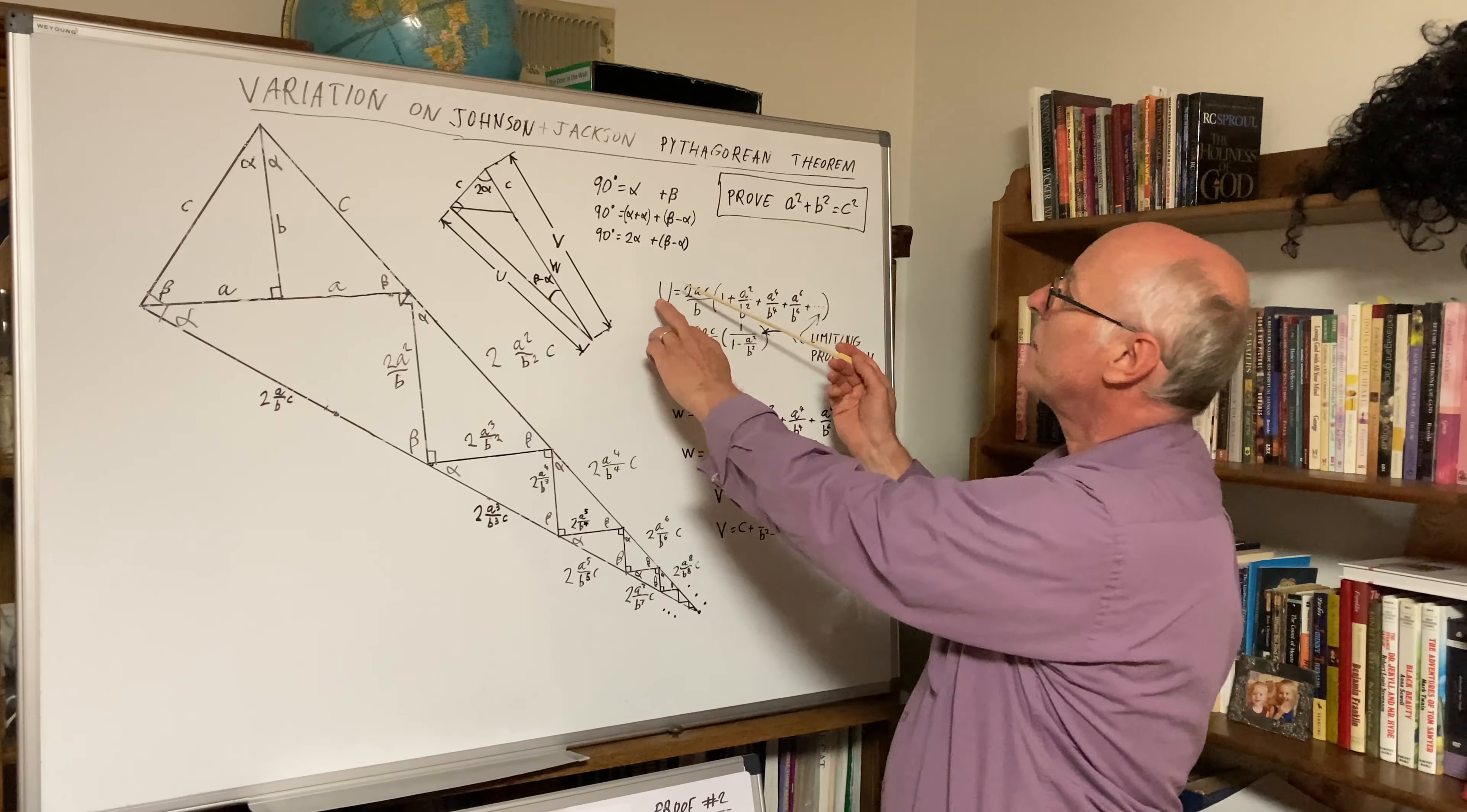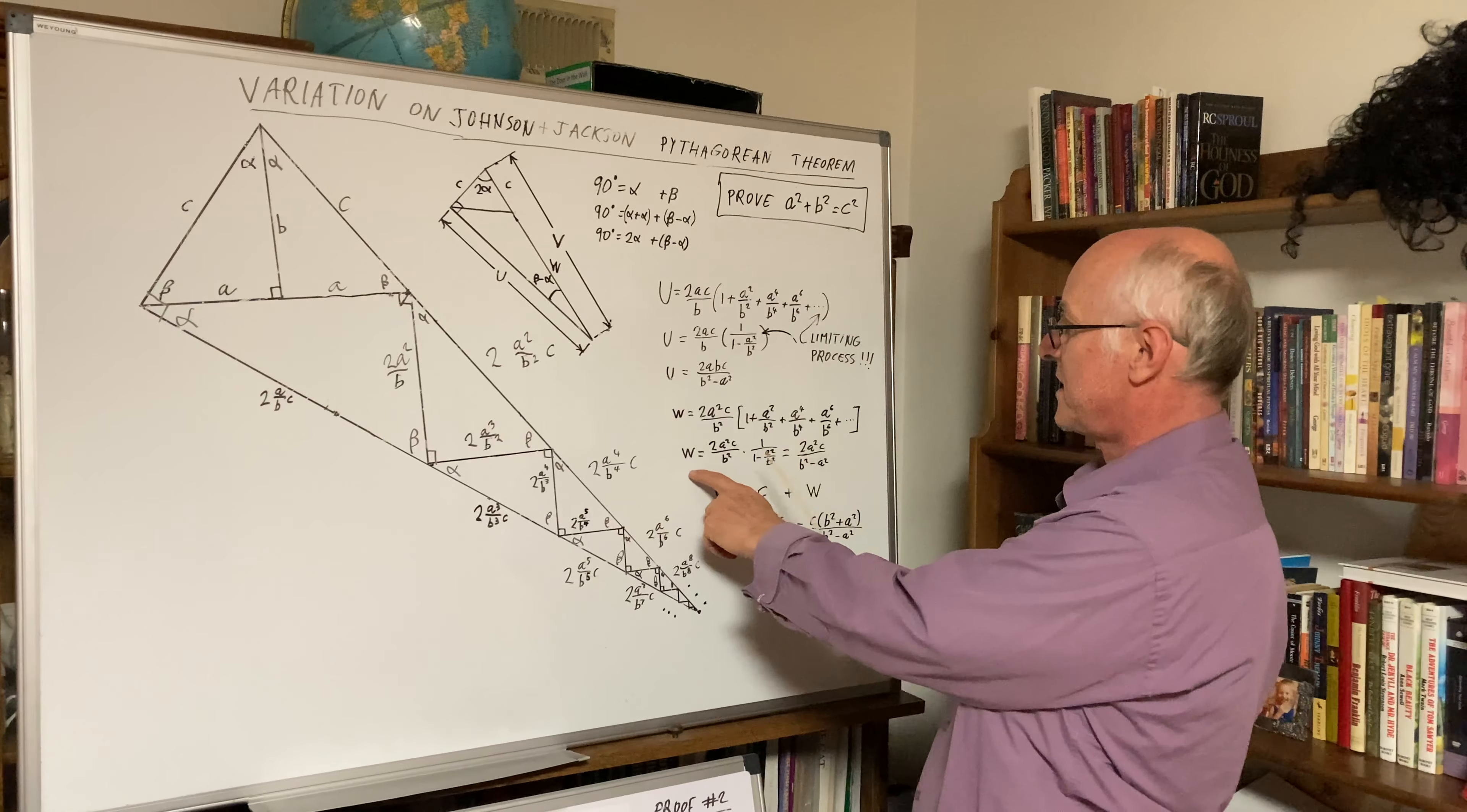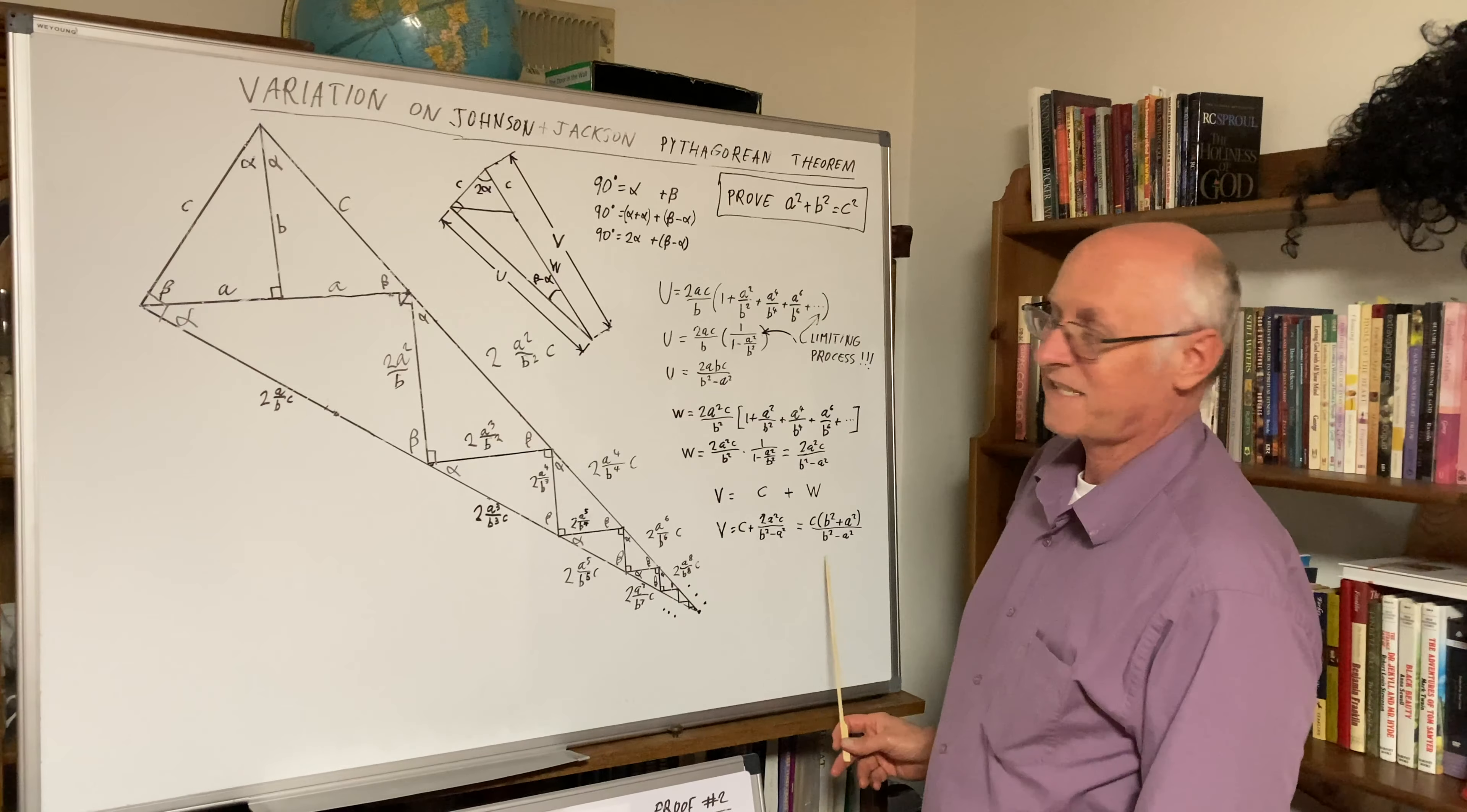We have calculated U to ABC over B squared minus A squared, and also V. Here's U, here's V. V consists of C plus W, and this W also requires a limiting process. So overall V is C times parentheses B squared plus A squared over B squared minus A squared.